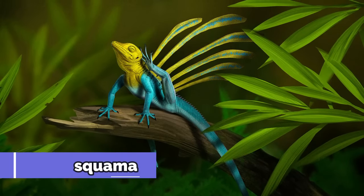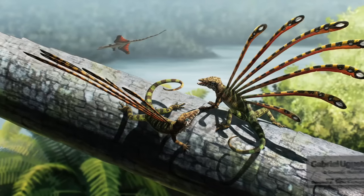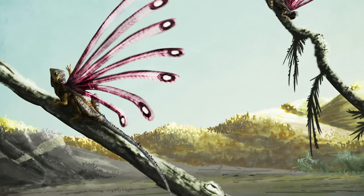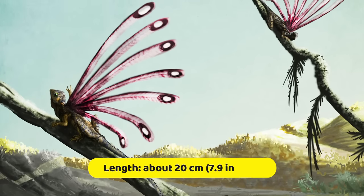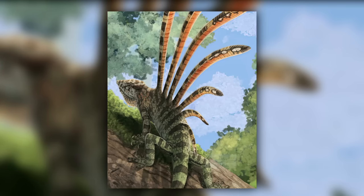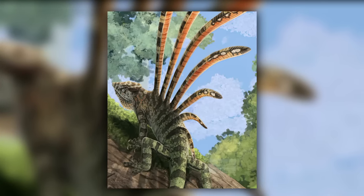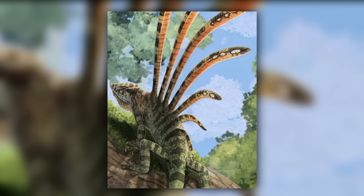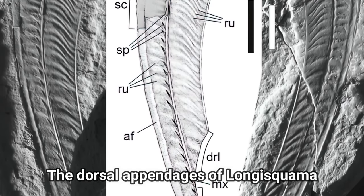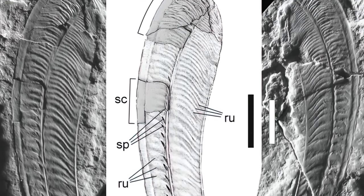Longusquama insignis is a fascinating and enigmatic fossil reptile species that lived during the late Triassic period, approximately 220 million years ago. It was a small reptile, with a length of about 20 centimeters, or 7.9 inches, with a slender and elongated body. Longusquama is known for its long, feather-like appendages that extend from its back. Some scientists have suggested that these structures are not true feathers, but rather elongated scales, or a unique evolutionary adaptation.